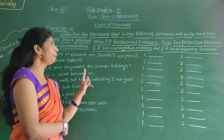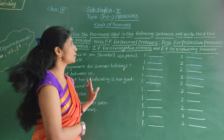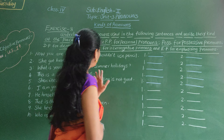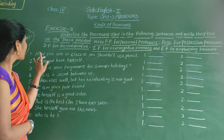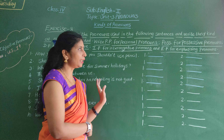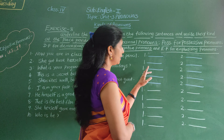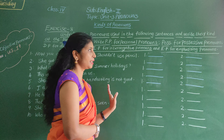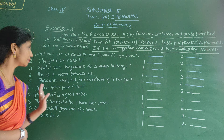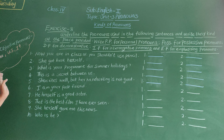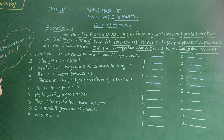Write PP for personal pronouns, PP for possessive pronouns, DP for demonstrative pronouns, IP for interrogative pronouns, and OP for objective pronouns.